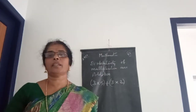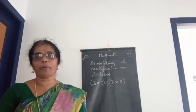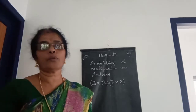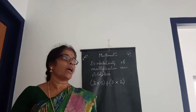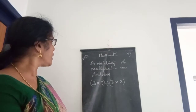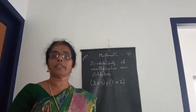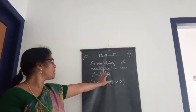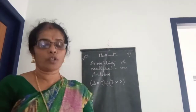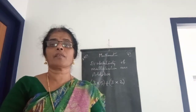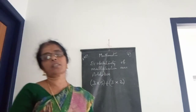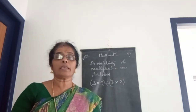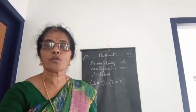We are going to study another property. You already learned about the properties of whole numbers — the closure property, the associative property, and next the distributivity of multiplication over addition. The use of these properties is to make calculations easier and faster. That is the purpose of these properties.